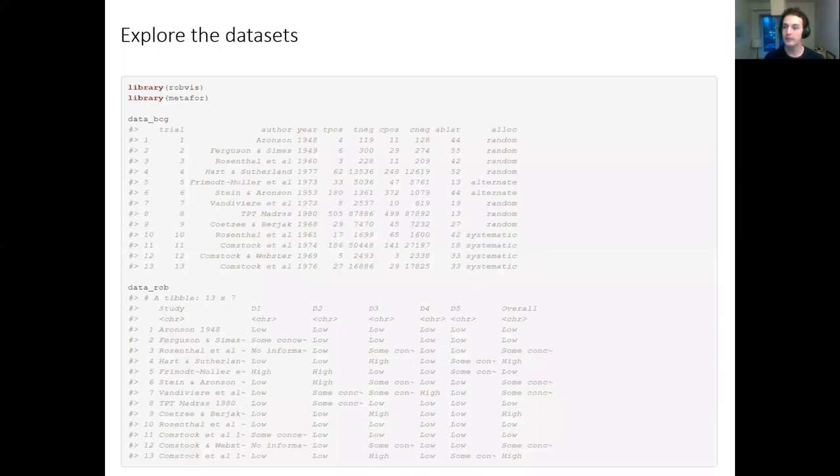I'm going to work us through an example. We load the two packages, RobViz and metafor, and we're using the BCG dataset from the metafor package, which presents the results of 13 randomized controlled trials examining the effect of the BCG vaccination on tuberculosis. In data_rob, we have the associated risk of bias assessments for those 13 studies. Because they're randomized controlled trials, we're using the risk of bias 2 assessment tool, which has five domains and one overall domain.